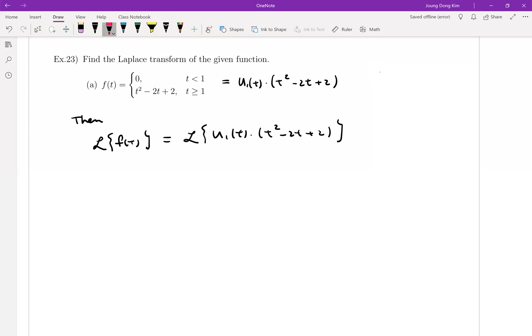As we talked about it, we're going to use the table number 13. Let me state number 13. What is that? The Laplace transform of uc(t) f(t-c) is equal to e to the minus cs times f(s).